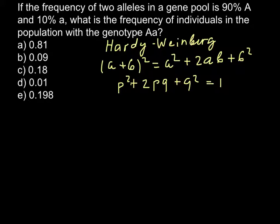We also may use F as frequency. Here we have P squared. P squared would stand for capital A capital A, which is going to be homozygous dominant. 2PQ would be heterozygous.